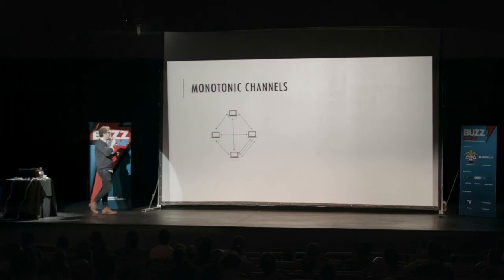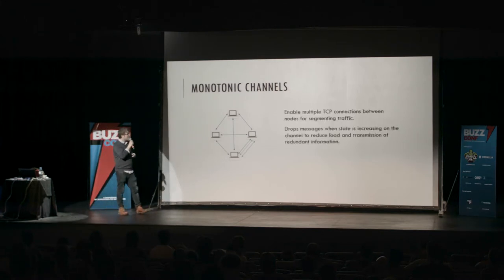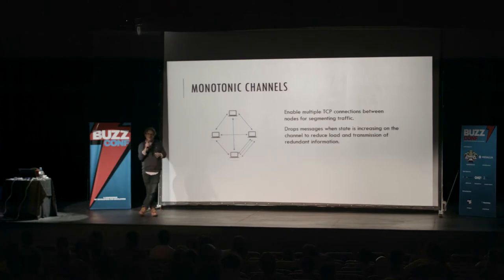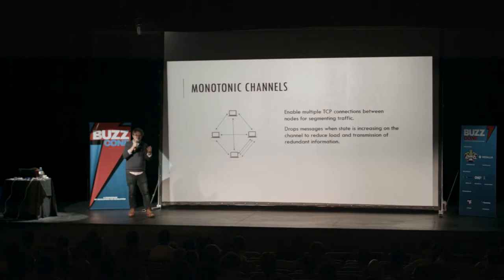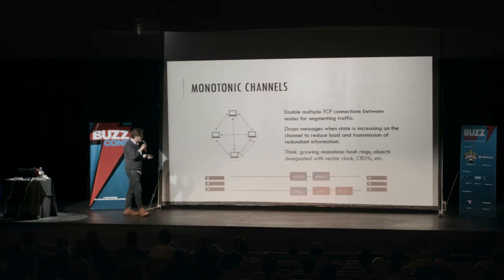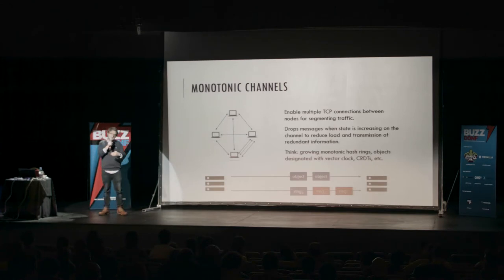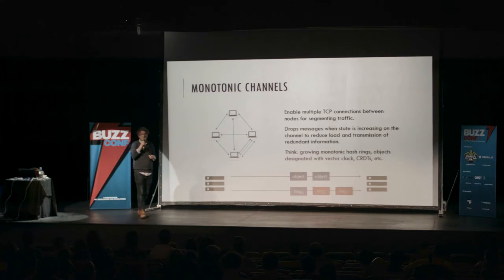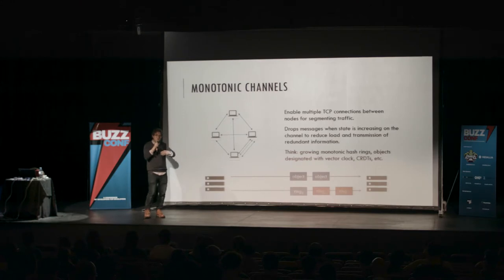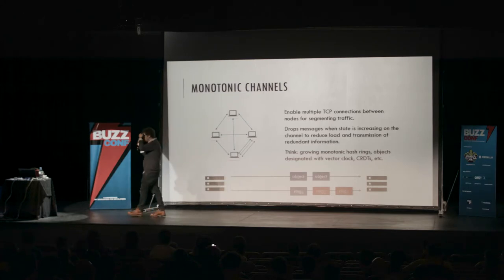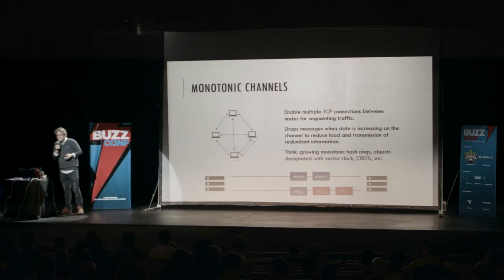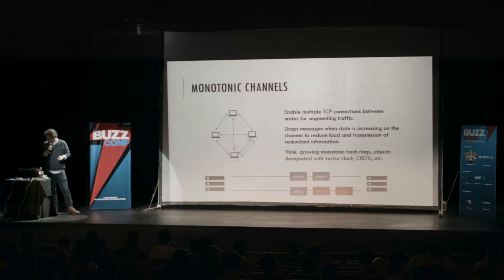The last optimization is monotone channels. Many data patterns — objects using a large hash ring that grows over time, timestamps, vector clocks, data structures that only grow — benefit from this. As things start slowing down on the wire, we can shed objects: if you send me an object to send and I've got one queued up that I haven't sent yet because the TCP window is small, I can drop the earlier objects because the last one I received subsumes all previous objects. This is really nice when dealing with systems like Riak where the ring is constantly growing.